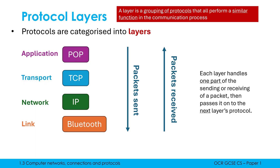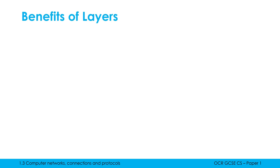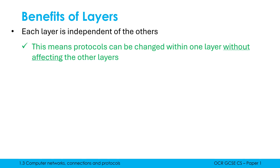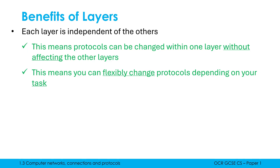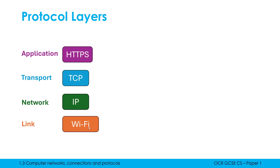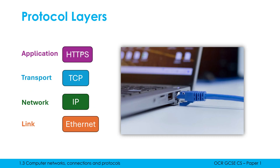You need to know that definition and understand the benefits of layers as a concept. An important fact is that each layer is independent of the others, which means protocols can be changed within one layer without affecting the other layers. This allows flexible changes — for example, if you're on Wi-Fi watching YouTube and decide to plug in an Ethernet cable, this won't affect anything else in the communication process, because all you've done is substitute a protocol at one layer without affecting any of the others.